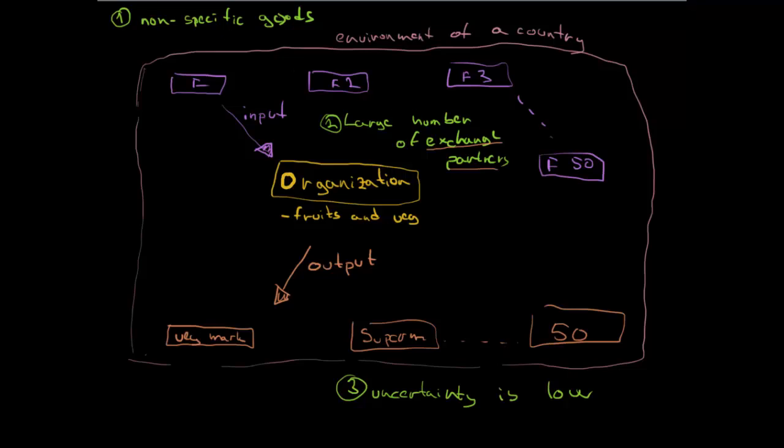And let's imagine what can happen if things go wrong and the transaction costs begin to rise. So how can they rise? We can maybe start at first dealing just apples, so that we are getting to specific goods, more specific goods. Then our second point, large number of suppliers, now decreases. Now we have got just two suppliers, so we have small number of exchange partners.